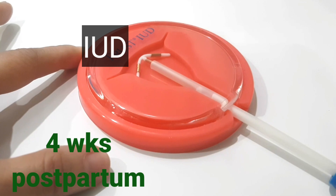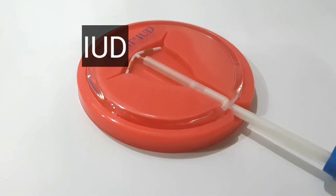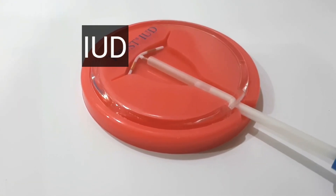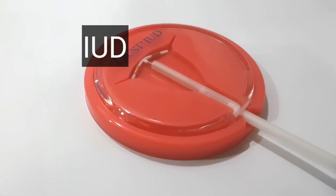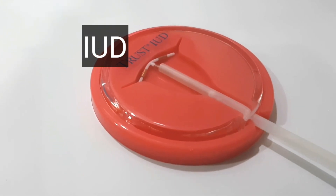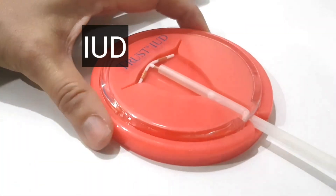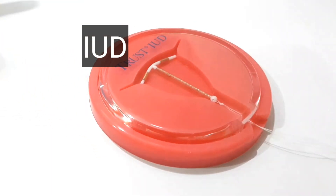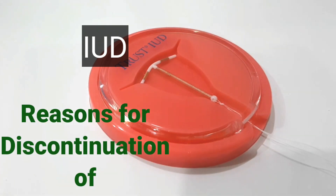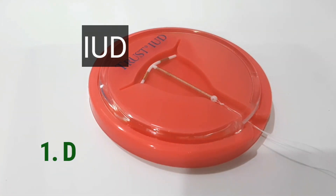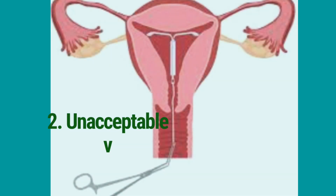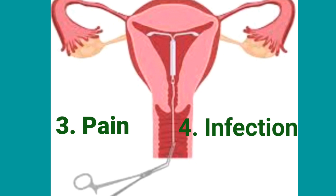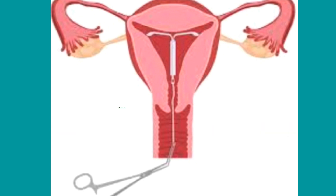IUD can also be inserted from four weeks postpartum, or immediately when shifting from another method that was used correctly. The client should be advised that insertion may cause pain and discomfort for a few hours and light bleeding for a few days, and should be informed about appropriate pain relief such as mefenamic acid. IUD can be removed anytime. Common reasons for discontinuation include desire for pregnancy, unacceptable vaginal bleeding, pain, and infection. The main reason for discontinuation of levonorgestrel is amenorrhea.